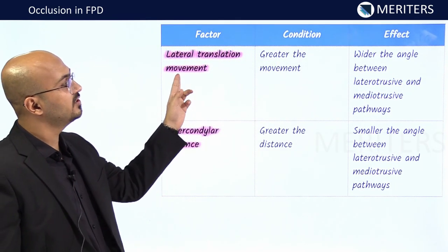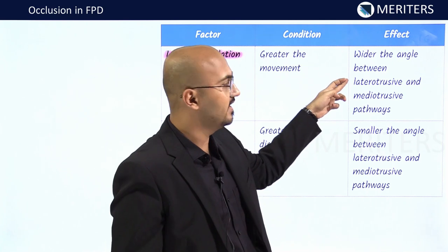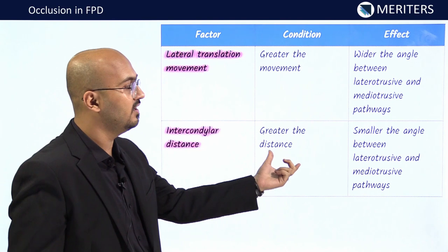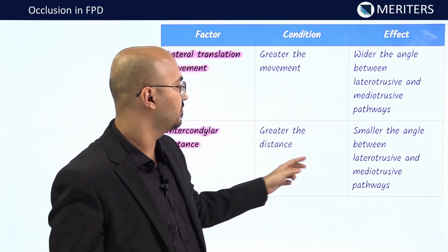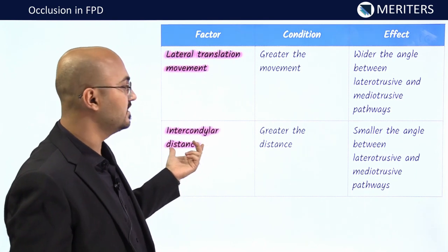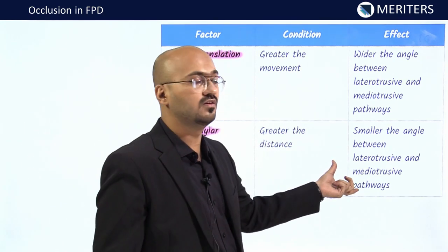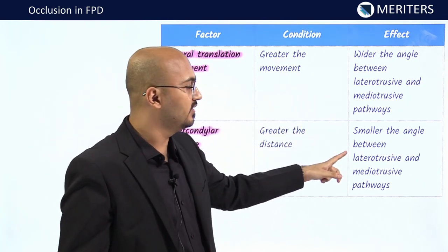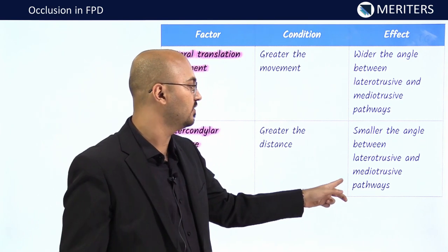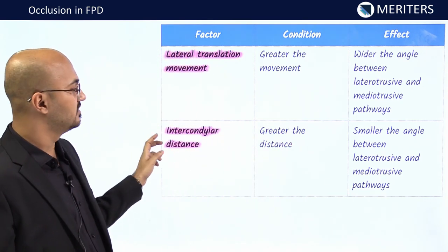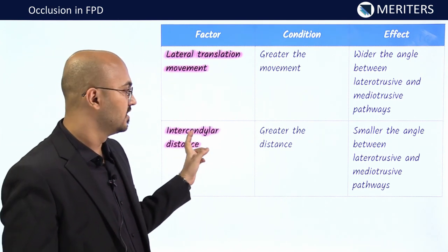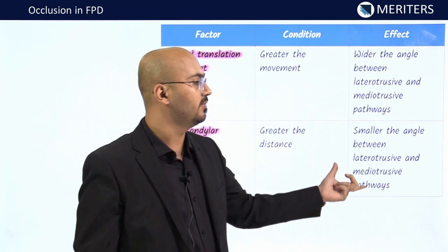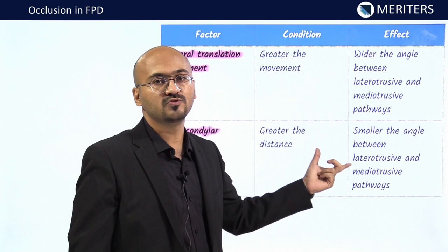Importantly, if the intercondylar distance is greater, you give a smaller angle between the latertrusive and meditrusive pathways. This is a commonly asked question in entrance exams — specifically remember that greater intercondylar distance means smaller angle between latertrusive and meditrusive pathways. For all other parameters, greater values mean wider angles; only for intercondylar distance do you give a smaller angle.